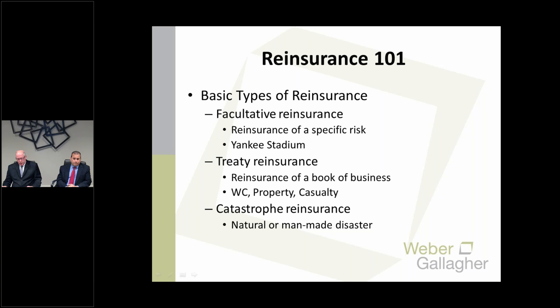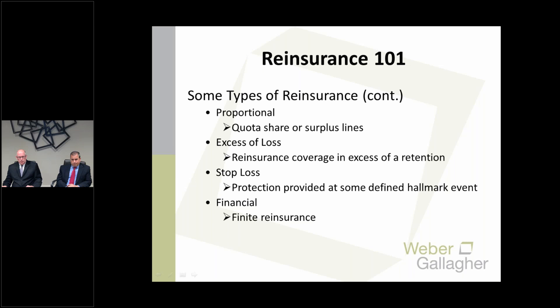To follow up on catastrophe reinsurance: losses for the insurance and reinsurance industry from natural catastrophes such as Irma, Harvey, Maria, and some other natural events totaled $330 billion in 2017. One of the main purposes of reinsurance is to spread the risk so that the cedent or insurance company doesn't bear the entire risk for these catastrophic events. A man-made disaster — such as the reactor meltdown in Japan — is distinct from a natural catastrophe like a hurricane or tornado.